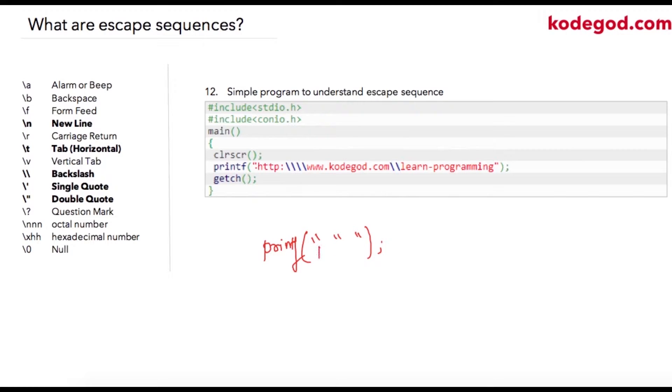This printf statement has a starting quote and ending quote. Now what about this? This will confuse the compiler and it will give an error about unterminated string. In that case, to tell the compiler explicitly that this double quote is for printing purposes, we add a backslash. The compiler on the output device replaces backslash double quote with a double quote.